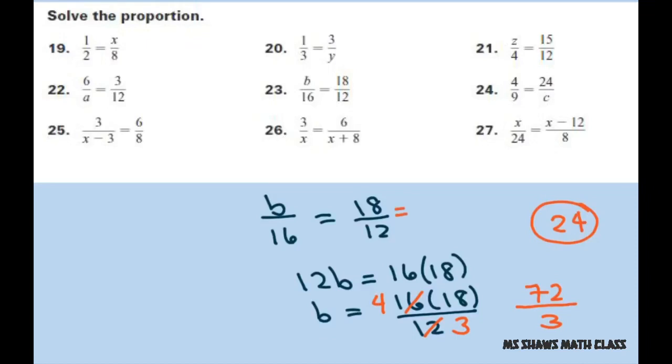Again, if you'd have reduced this from the get-go, you could have divided both of those by 3 and that would have been 6 over 4. Actually divide both by 6 and you would have gotten 3 over 2, and it would have made it a little easier.